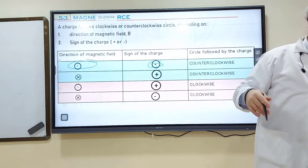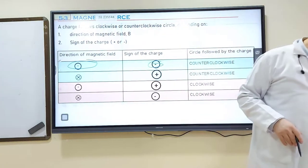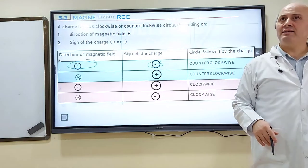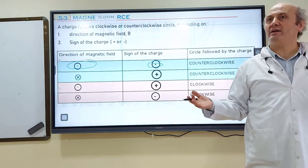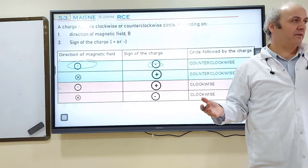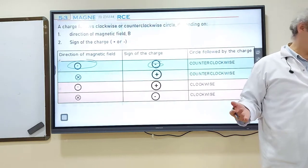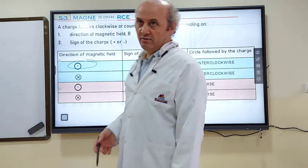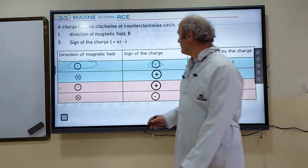Student question: for question seven, what if the velocity is parallel to the magnetic field? If the charged particle moves parallel to the magnetic field, there is no magnetic force. It will follow a linear path. No force acts on it, so by inertia, objects follow linear paths.